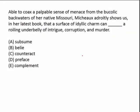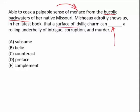In this sentence, we have a contrast between the bucolic backwaters. Bucolic means rural in a pleasant way — think nice red barns and contented cows grazing. What the author does is bring out a menace in this nice rural setting. In her latest book, there's a surface of idyllic charm — that bucolic backwater — but there's actually some menace, something negative underneath that charm. A good word that works here is mask, or hide, or disguise — something of that nature.